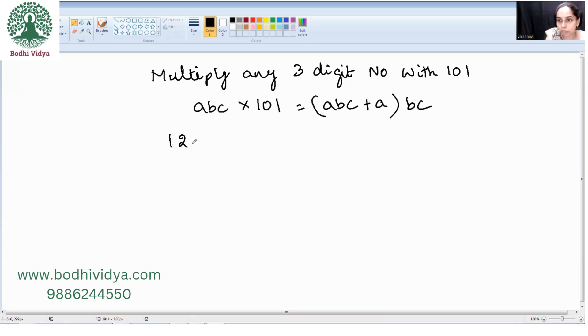For example, 123 into 101. 123 plus A is how much? A is 1. BC is how much? 23. Just write 23. So our final answer is 12423. We will take one more example.